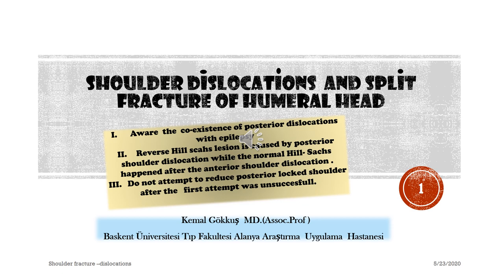Shoulder dislocations and split fracture of the humeral head. Be aware of the coexistence of posterior dislocations with epilepsy. Reverse Hill-Sachs lesion is caused by posterior shoulder dislocation, while the normal Hill-Sachs happens after anterior shoulder dislocation. Do not attempt to reduce a posterior dislocated shoulder after the first attempt was unsuccessful.